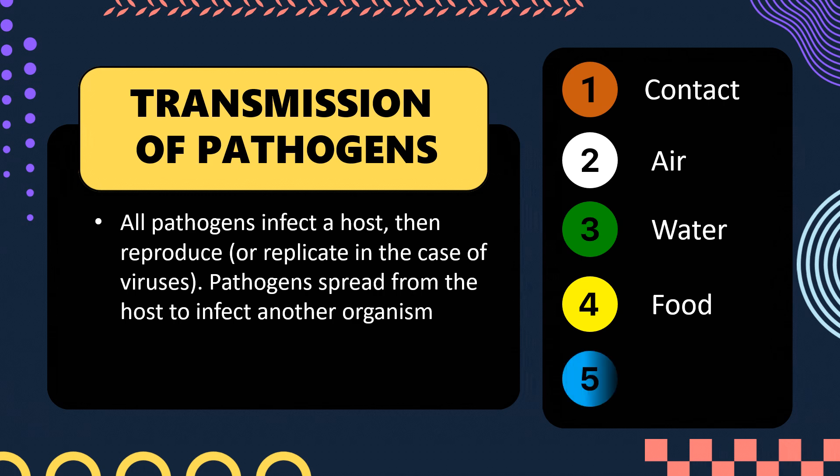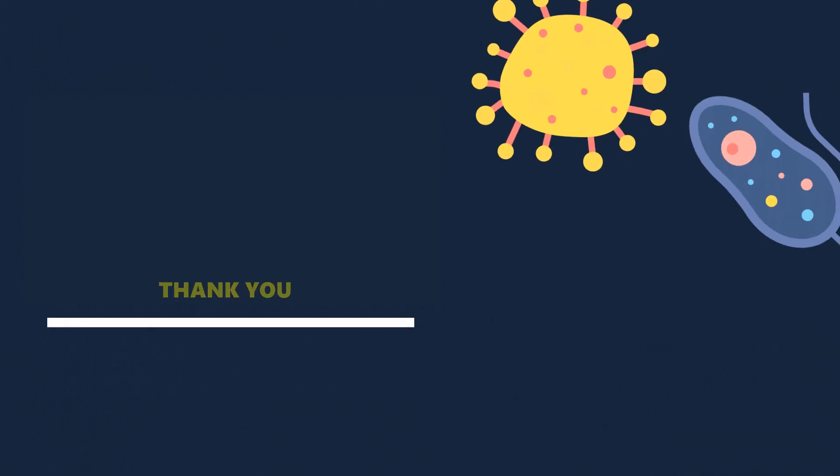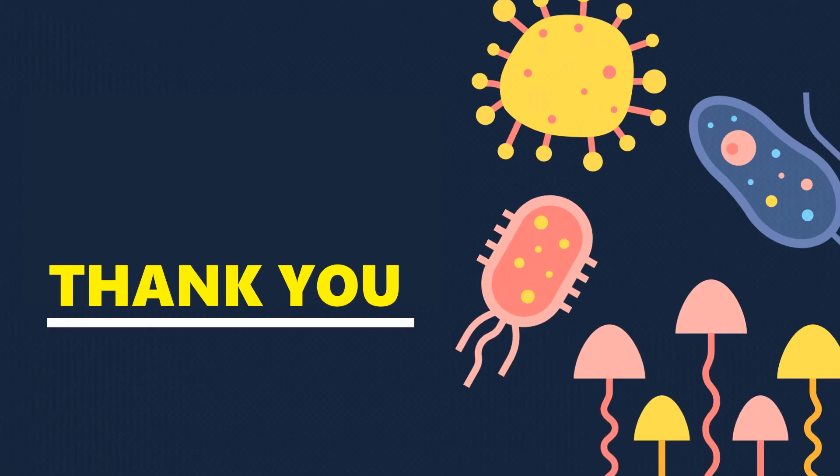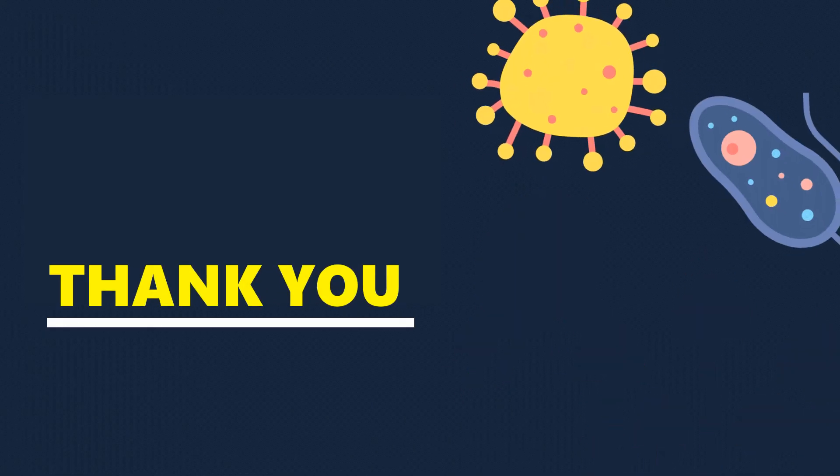Finally, certain pathogens can transfer to other individuals via vectors. For example, the malaria parasite is spread by the female Anopheles mosquito, where the mosquito acts as the vector. That's all about pathogens and their various types — see you in the next video.